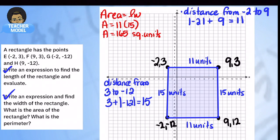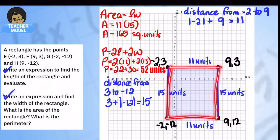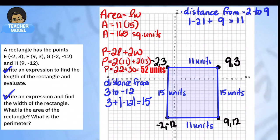Now for perimeter: perimeter equals two times the length plus two times the width. That's two times eleven plus two times fifteen, which is twenty-two plus thirty, equaling fifty-two units — the total distance all the way around. Look at all we've done: we know how to plot points, find the distance between any two points on a vertical or horizontal line, and use that to find the area and perimeter of any quadrilateral on a coordinate grid.